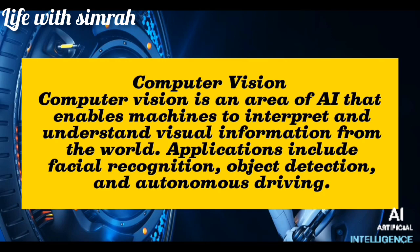Computer vision is an area of AI that enables machines to interpret and understand visual information from the world. Applications include facial recognition, object detection, and autonomous driving.